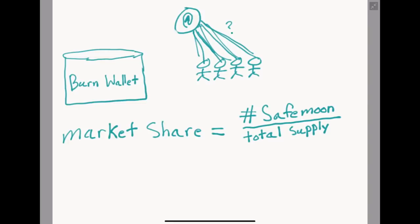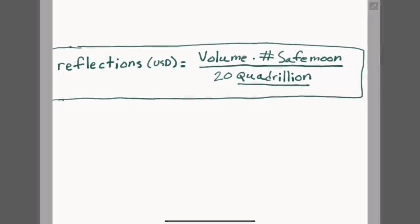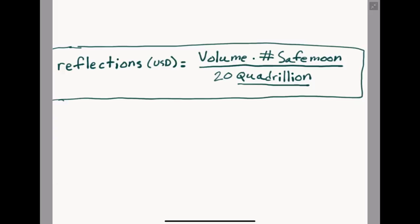This is a simple update to our equation, because instead of focusing on the total supply of tokens, 1 quadrillion, we use our circulating supply, which at the time of writing is near 580 trillion tokens. Note that circulating supply, when referring to cryptocurrency, refers to the total supply in existence, in Safemoon's case, the total number of coins that have not been burned. So our new equation becomes reflections in USD is equal to the volume times the number of Safemoon you own, divided by 20 times the circulating supply.